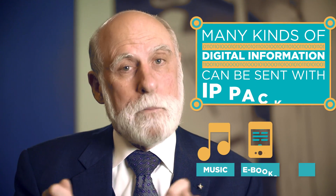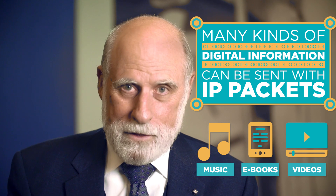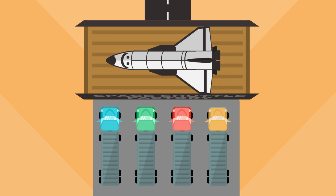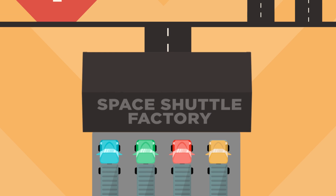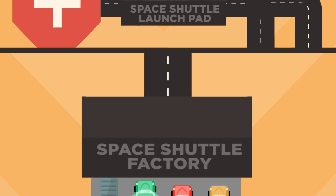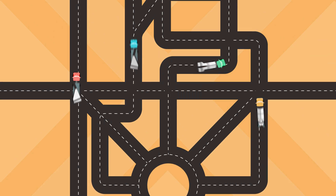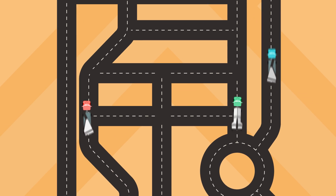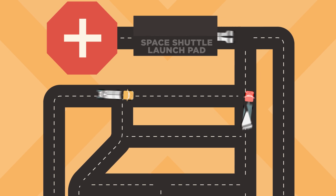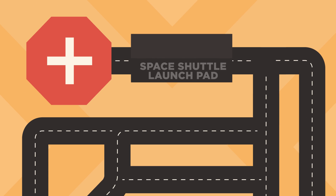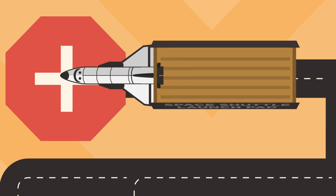And just as you can transport all sorts of stuff inside a car, many kinds of digital information can be sent with IP packets, but there are some limits. What if, for example, you need to move a space shuttle from where it was built to where it will be launched? The shuttle won't fit in one truck, so it needs to be broken down into pieces, transported using a fleet of trucks. They could all take different routes and might get to the destination at different times, but once all the pieces are there, you can reassemble the pieces into the complete shuttle and it'll be ready for launch. On the internet, the details work similarly.